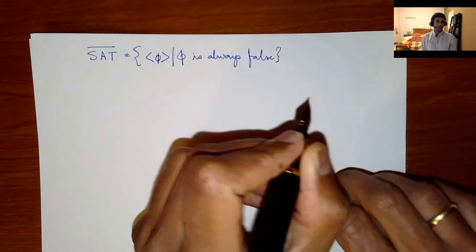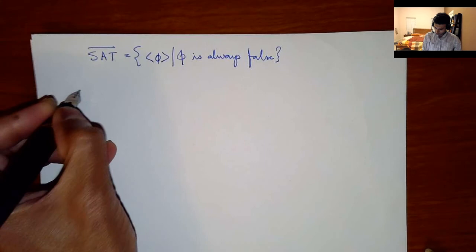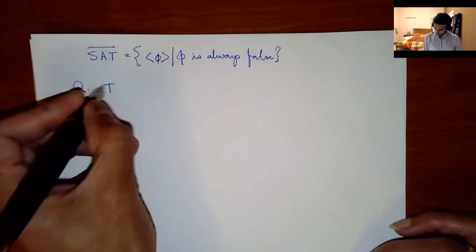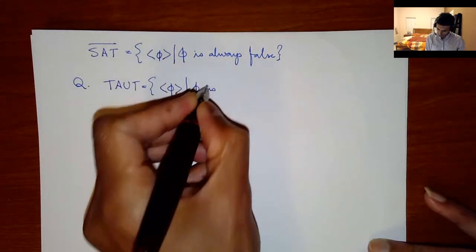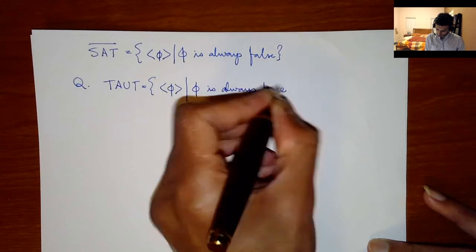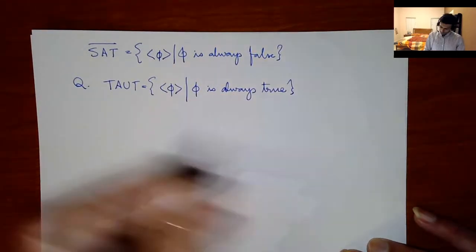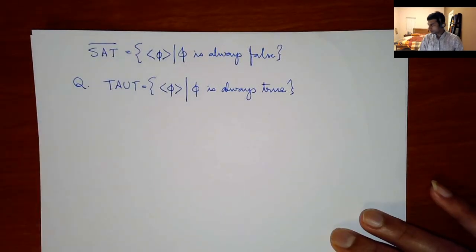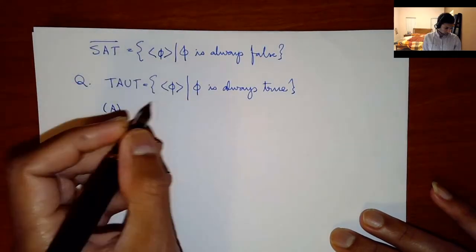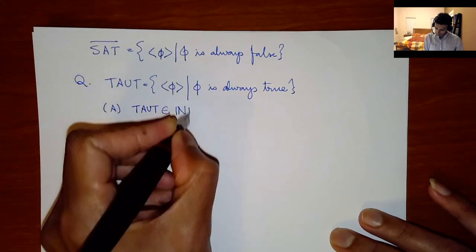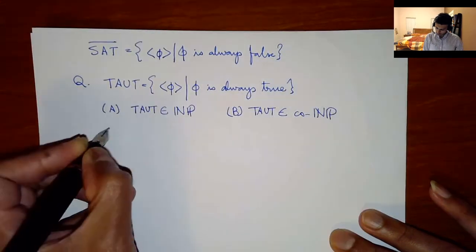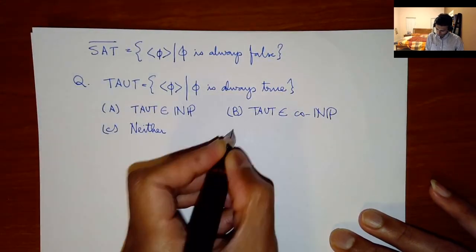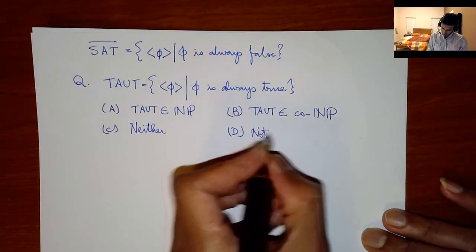Just to make sure we're on the same page, consider the language Tautology — where φ is always true. I'm going to make a bunch of statements and you tell me which is true. A: tautology is in NP. B: tautology is in co-NP. C: neither of these is true. D: not sure. Let me launch this poll.